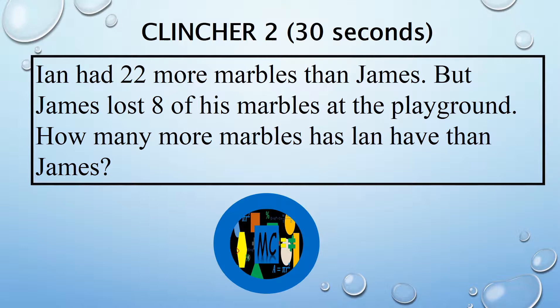Ian had 22 more marbles than James, but James lost eight of his marbles at the playground. How many more marbles does Ian have than James?